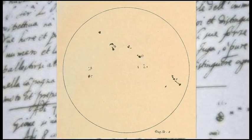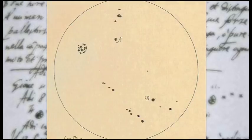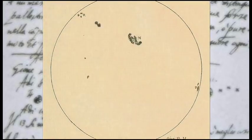His detailed sketches, produced over the summer in 1612, revealed that the sun was not a static orb in the sky, but a dynamic force.